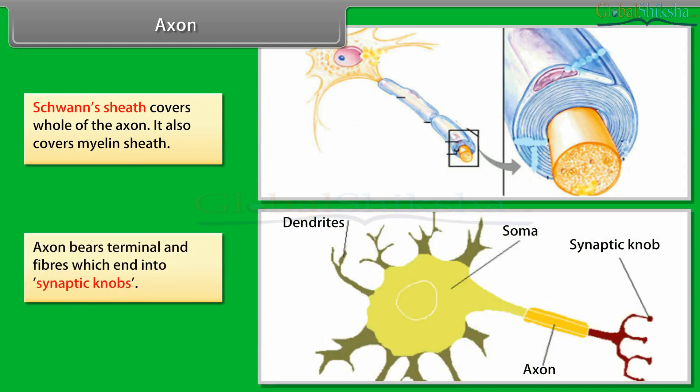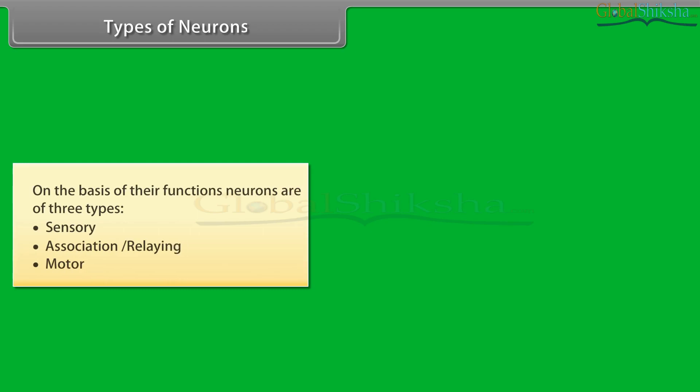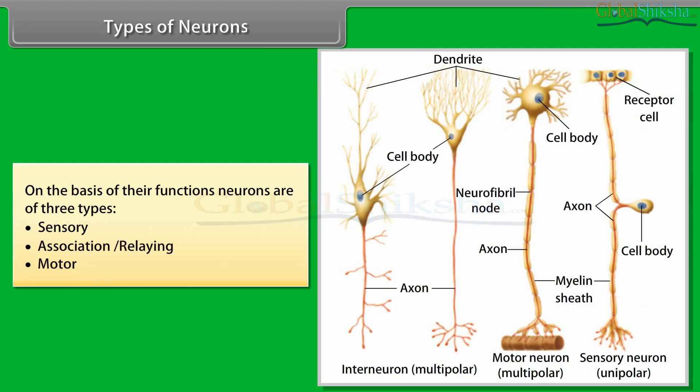The myelin sheath around the axon is an insulating and protective sheath. At certain places, the myelin sheath is absent and that area is known as the node of Ranvier. A Schwann sheath covers the whole of the axon and also covers the myelin sheath. The axon bears terminal end fibres which end into synaptic knobs.